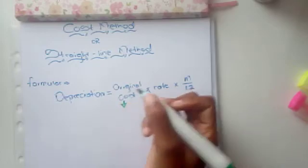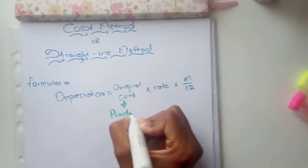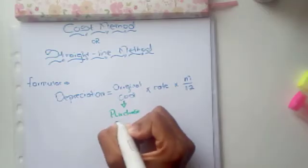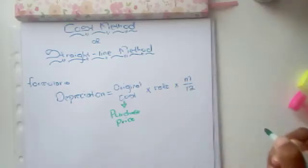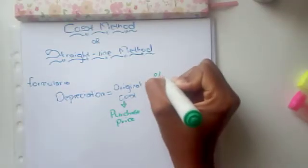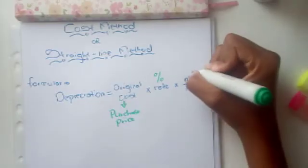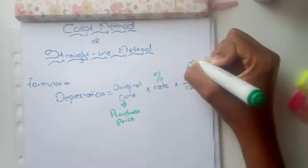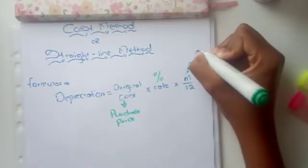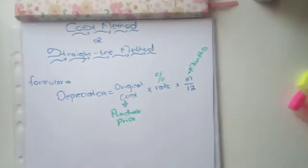When we talk about original cost, we are talking about the purchase price at which you purchased the asset — whenever you purchased it, whether this year, last year, or in 1995. That purchase price is the original cost. The rate refers to the percentage rate, which you usually get in your adjustment information showing how the company depreciates their assets.